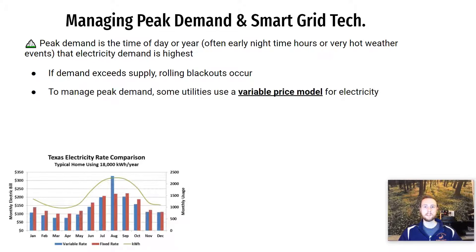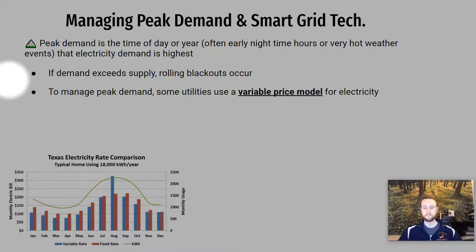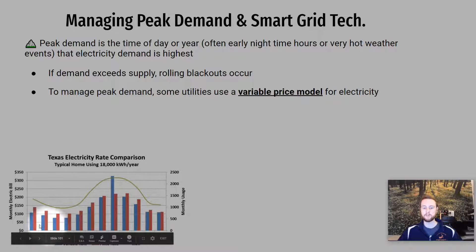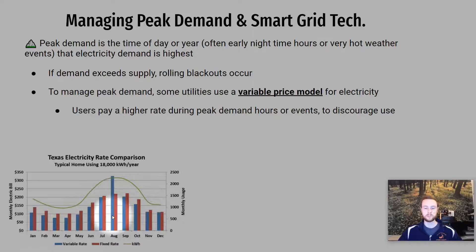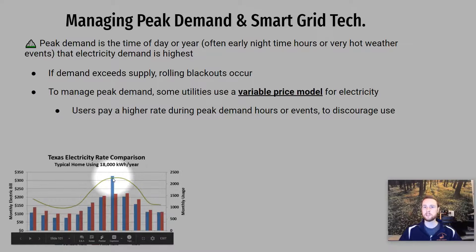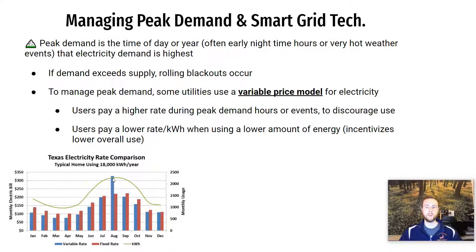One way to address this is a variable price system, sometimes called a tiered rate system. You pay a different rate depending on how much electricity you use. Looking at the graph, when you use a lower amount of electricity you pay a lower rate per kilowatt hour, but in a month where usage was very high, the bill goes way up because electricity was used at a higher rate. This basically discourages high use and incentivizes consumers to buy more efficient appliances, use a smart thermostat, or otherwise rein in their electricity consumption.